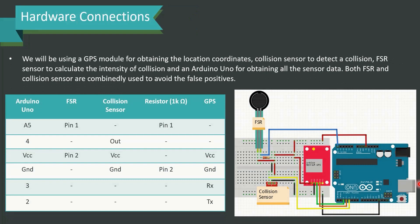For hardware connections, we will be using a GPS module for obtaining location coordinates, a collision sensor to detect a collision, an FSR sensor to calculate the intensity of the collision, and an Arduino Uno for obtaining all sensor data. Both the FSR and collision sensor are used together to avoid false positives and ensure the system detects events accurately. A table and diagrammatic representation of the connections are provided.